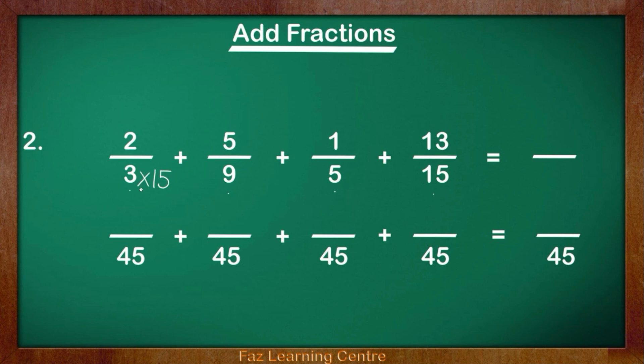Remember the rule? If you times the bottom, the denominator by 15, you have to times the top by 15 too. 2 times 15 equals 30. Let's look at the next fraction. 9 times what equals 45? 9 times 5 equals 45. We have to do exactly the same on the top. 5 times 5 equals 25.